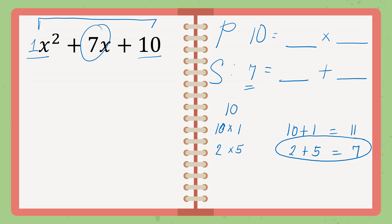Therefore, we will use 2 and 5. Because 2 multiplied by 5, the answer is 10. 2 plus 5, the answer is 7. Therefore, our answer will be x plus 2, x plus 5.